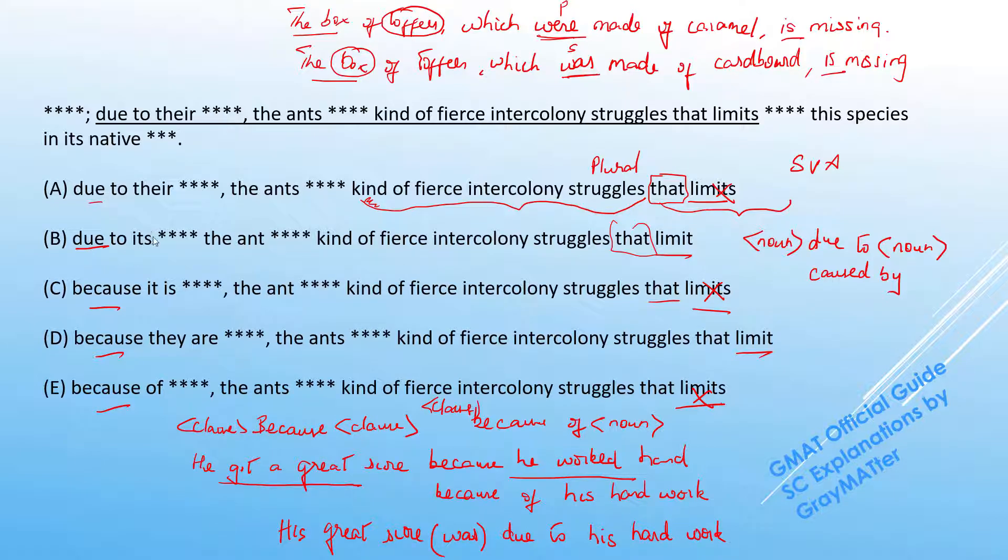So if we check in B, we have 'due to it something.' Now this is a noun phrase, the ant considers all of its fellows. So that is a clause construction.